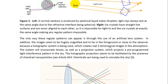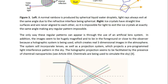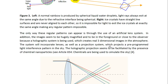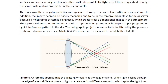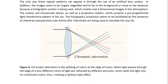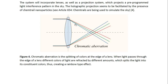But in the case of ice crystals, that is impossible because ice crystals have straight line interfaces, meaning the refraction is always different for each crystal, and they are never aligned with each other, so light exits at different angles. You can never produce any regular pattern with light passing through ice crystals. The only way these regular patterns can appear is through the use of an artificial lens system. Additionally, the images seem to be hugely magnified and appear in the foreground because a holographic system is being used, which creates real three-dimensional images in the atmosphere. The system incorporates lenses as well as a projection system that projects a pre-programmed light interference pattern in the sky. The holographic projection seems to be facilitated by the presence of chemtrail nanoparticles. You may look at article 654 entitled 'Chemtrails: All Being Used to Simulate the Sky.' A lens produces chromatic aberration because different frequencies or wavelengths of light are refracted by slightly different amounts, splitting them up and creating a rainbow effect.